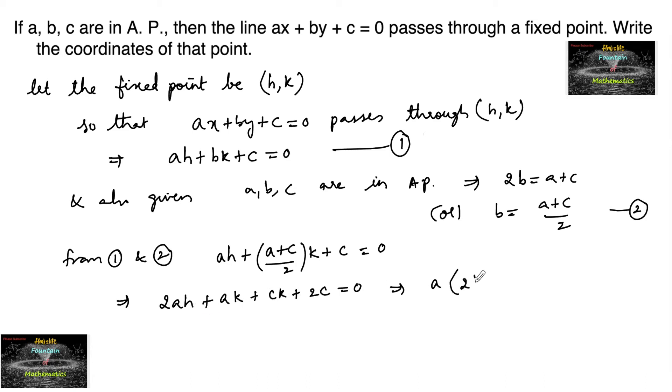So we have 2H plus K, and here C taken common, K plus 2 equals 0, which represents a family of straight lines passing through 2H plus K equals 0 and K plus 2 equals 0.